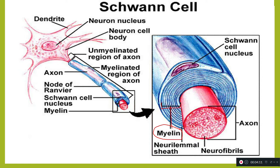The axon terminals send impulses to the dendrites of other neurons. The neurolema is not continuous — it is interrupted at regular intervals, where there is a direct connection between the neurolema and the axon. If you cut a cross-section of the axon, you can see the axon itself and the neurofibrils inside.